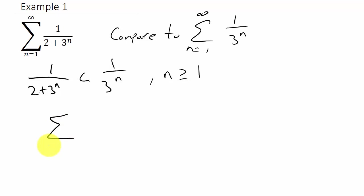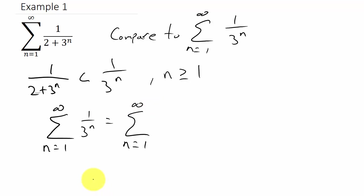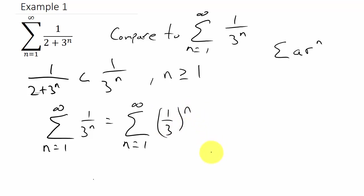Now I need to determine what the series 1 over 3 to the n does. This is a geometric series. We can rewrite it as the sum from n equals 1 to infinity of 1 over 3 to the n. I need to get this in the form a times r to the n — remember, the geometric series form is a times r to the n. We can rewrite this as (1/3) to the n, so we can see that r is equal to 1/3.